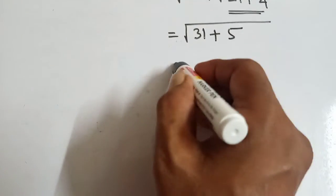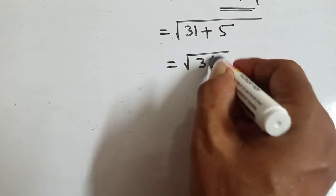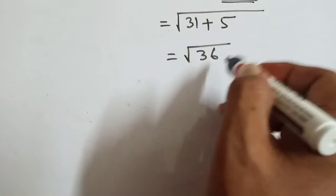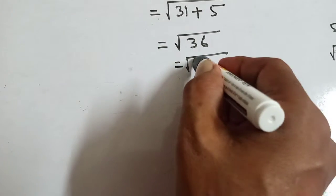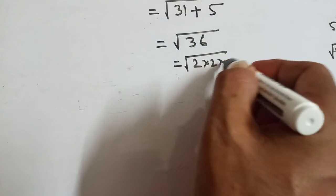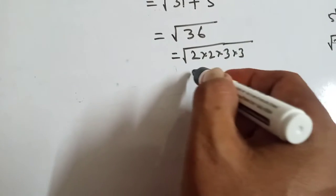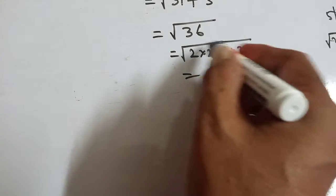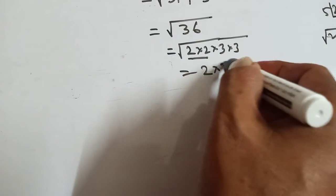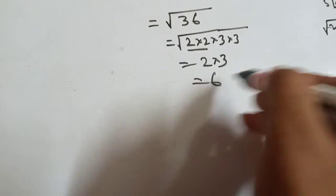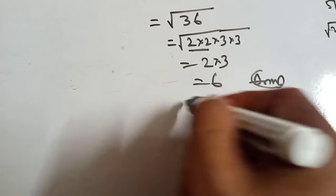Now, Root under 31 plus 5, that means 36. You can write it as 2 times 2 times 3 times 3. That means the Square Root of 36 is 6, which is the answer.